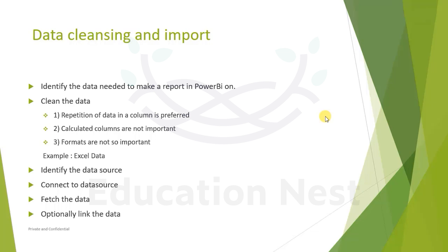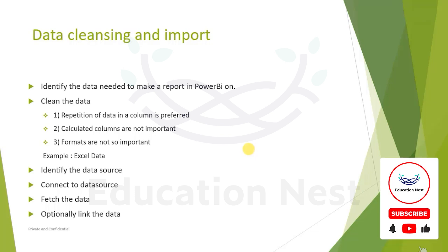In the last session we saw how to import data from Excel and what kind of desired data is imported. We saw at a higher level how relationships are built. We also saw what we need to do with the data — for example, you don't want multiple kinds of elements within a single column of an Excel sheet. Calculated columns are not critical at the Excel stage because they can be done in Power BI itself. We also saw that formats are not that important because they can be modified once the data is in the Power BI system.